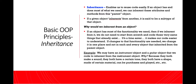Our next OOP principle is inheritance. Inheritance enables us to reuse code easily. If an object has and does most of what we need, we can inherit these attributes and methods from the parent object. If a given object inherits from another, it is said to be a subtype of that object. Why would we inherit from an object? If an object has most of the functionality we need, then if we inherit from it, we don't need to start from scratch and code those very same things that already exist. It's a time-saver, it makes our code easier to understand, and if changes to the functionality are needed, we change it in one place and not in each and every object that inherited from that parent object.